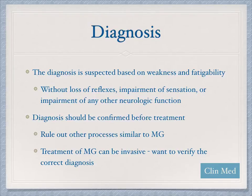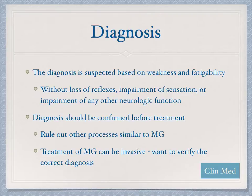The diagnosis is initially made on suspicion based on a patient's complaints and physical exam findings. They should complain of weakness and fatigability, but you should not find loss of reflexes, impairment of sensation, or any other focal neurologic findings on exam. The diagnosis should be confirmed before starting treatment — you want to rule out other processes, because treatment for myasthenia gravis can be rather invasive.